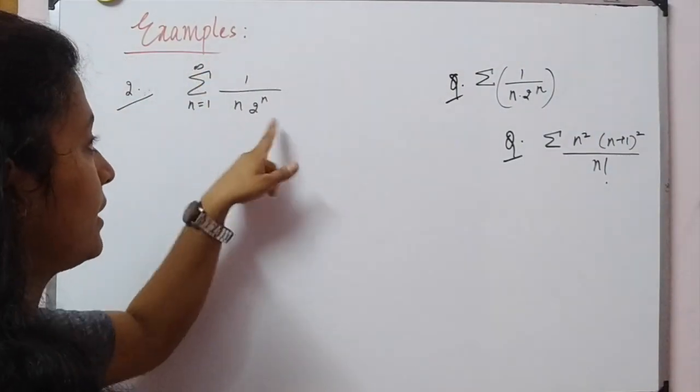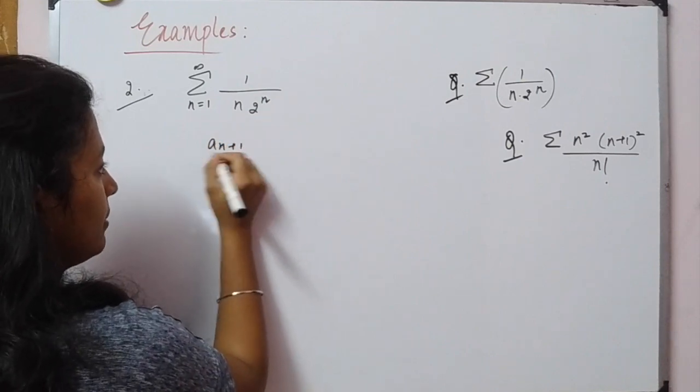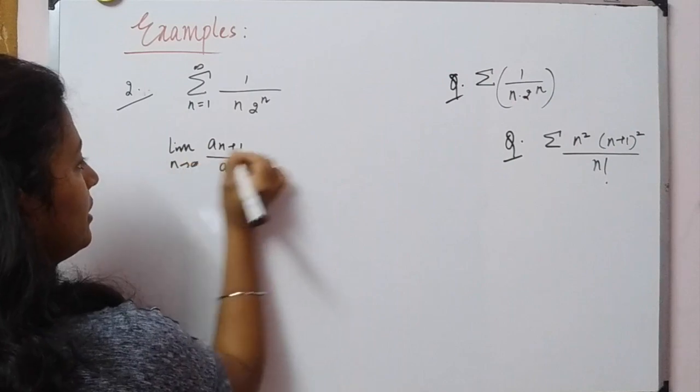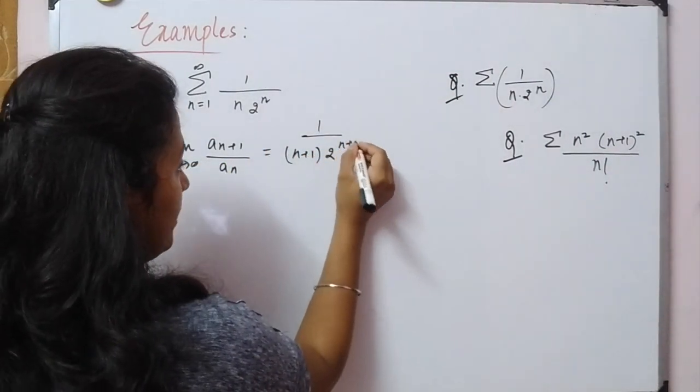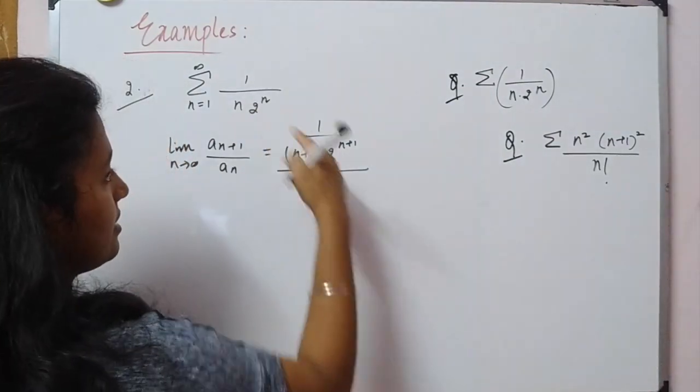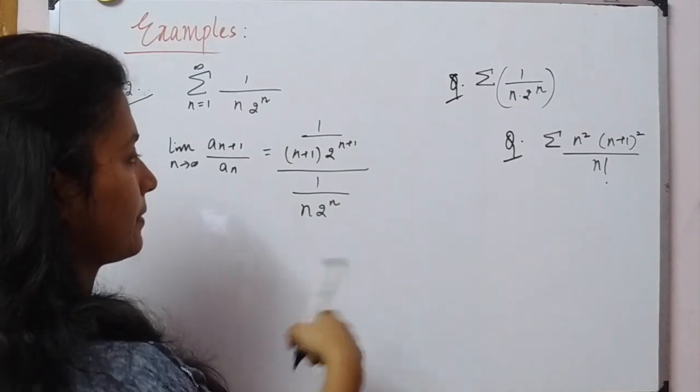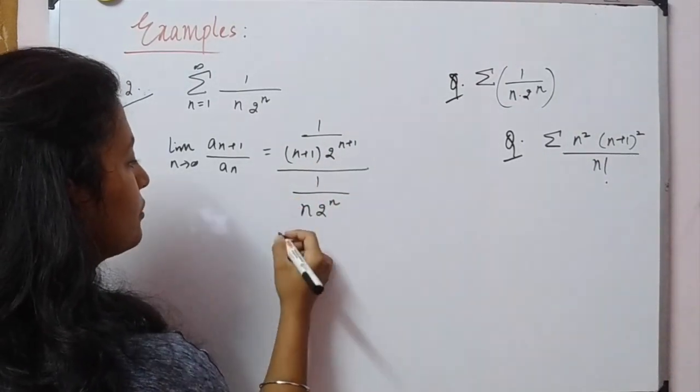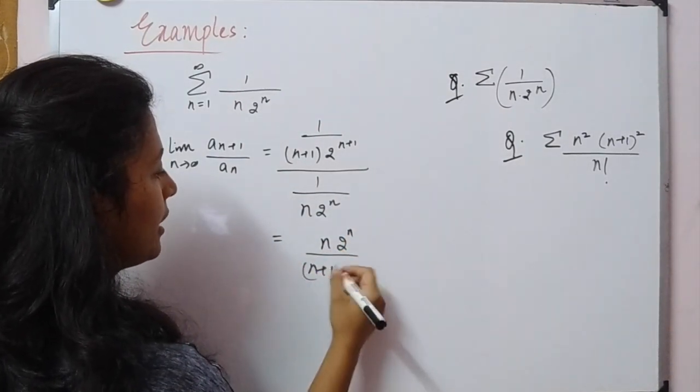Let's do the same procedure with our next example: 1/(n·2ⁿ). Now again we'll apply the same procedure, aₙ₊₁/aₙ, and find the limit as n tends to infinity. This gives us 1/((n+1)·2^(n+1)) divided by aₙ, which is 1/(n·2ⁿ). Now we need to reduce this.